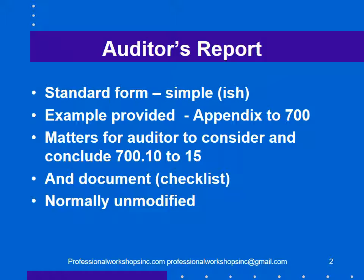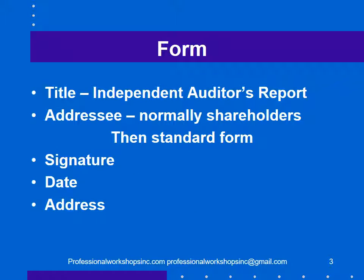Presumably a checklist will be helpful to remind the auditor of all the things in those sections. The audit report is normally unmodified — a better word actually than unqualified; unmodified is the more modern term. The standard audit report is titled 'The Independent Auditor's Report.' It is addressed normally to the shareholders, and then there's a standard form of report, followed by a signature, a date — and dating is complicated, and I have a module on that — and the auditor's address.